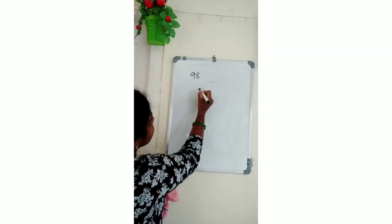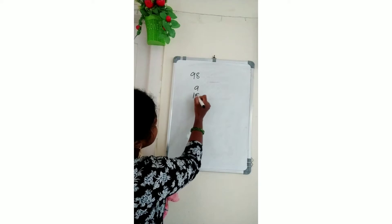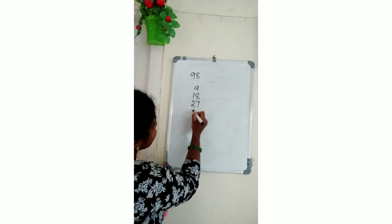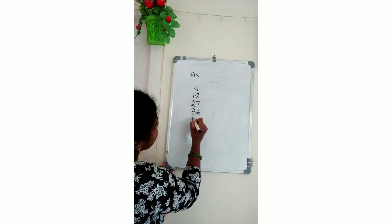First, write the 9 table. 9 ones 9, 9 twos 18, 9 threes 27, 9 fours 36, 9 fives 45.